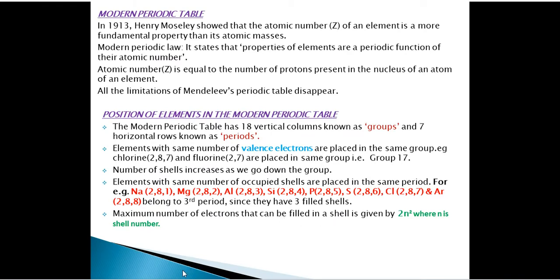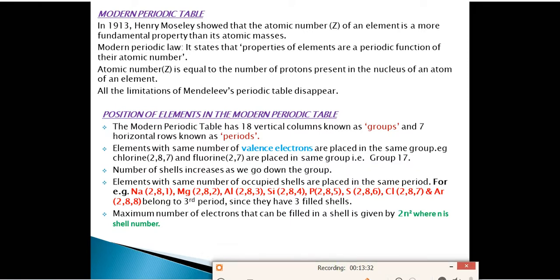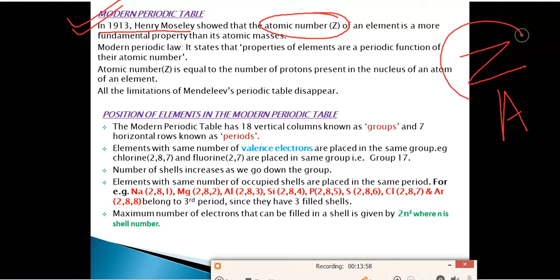After Mendeleev's periodic table, we have the Modern Periodic Table. In 1913, Henry Moseley showed that atomic number Z is a more fundamental property than atomic mass. We represent atomic number with Z and atomic mass with A. According to Henry Moseley, atomic number is more fundamental than atomic masses.